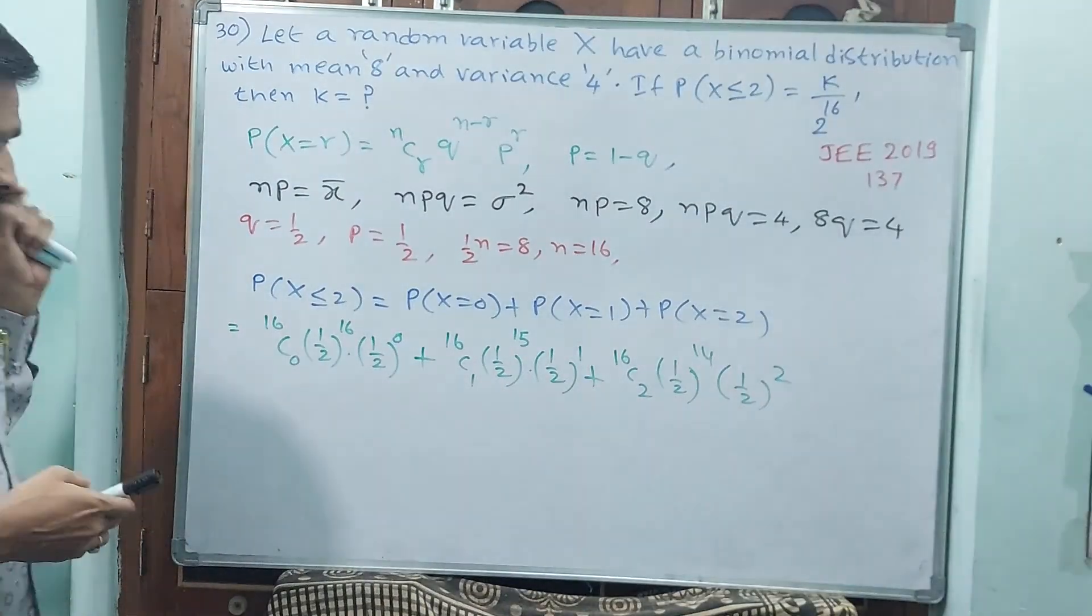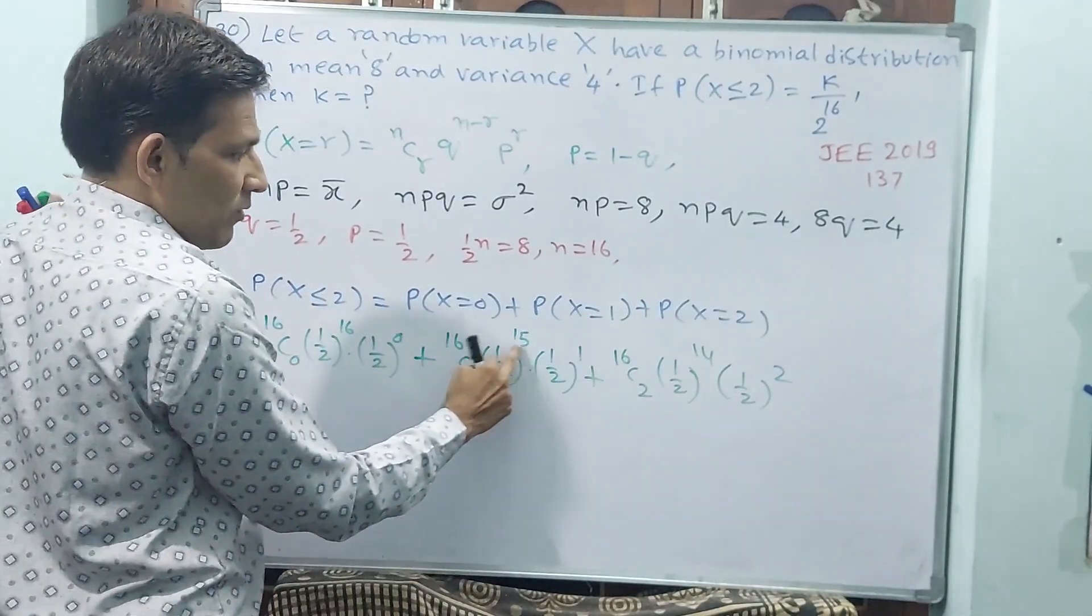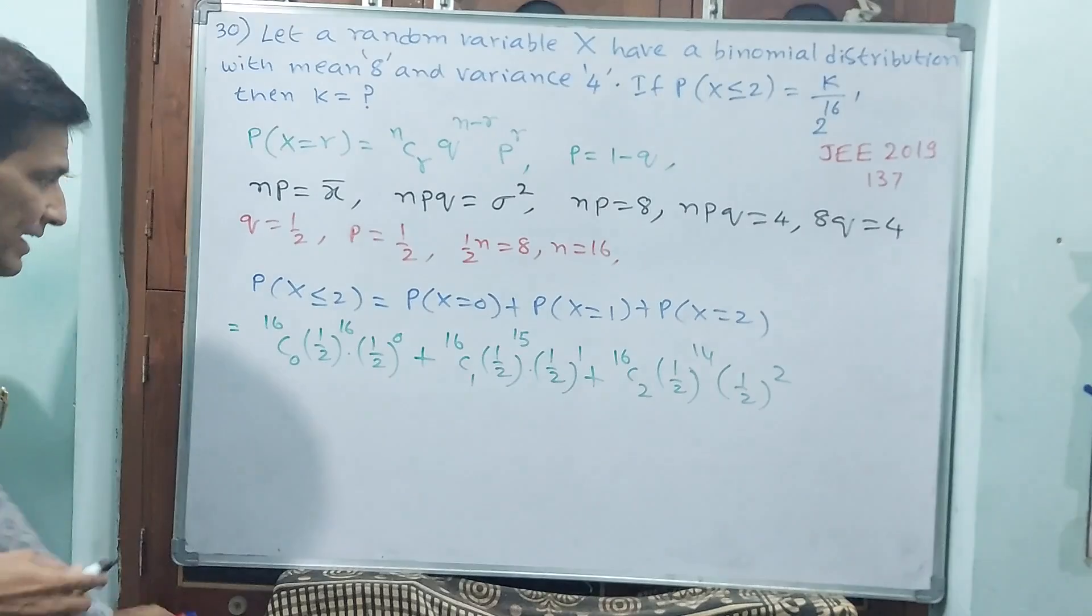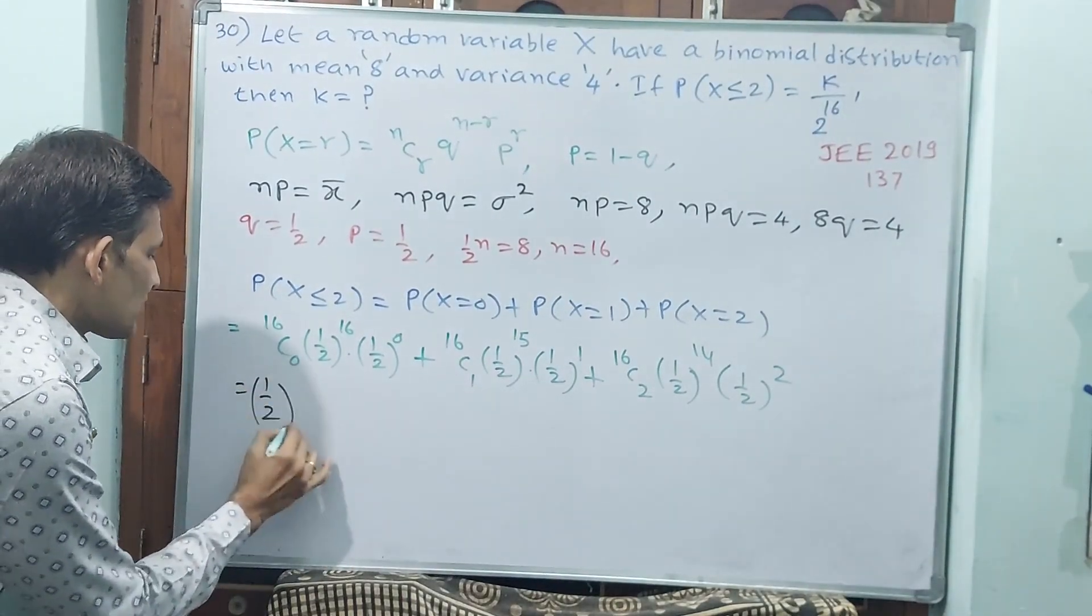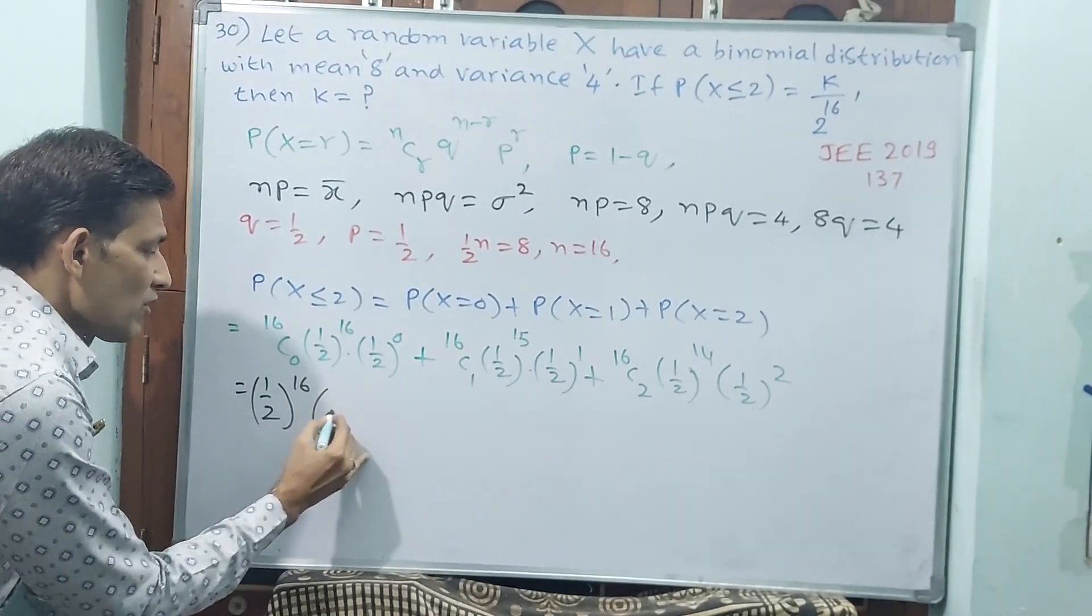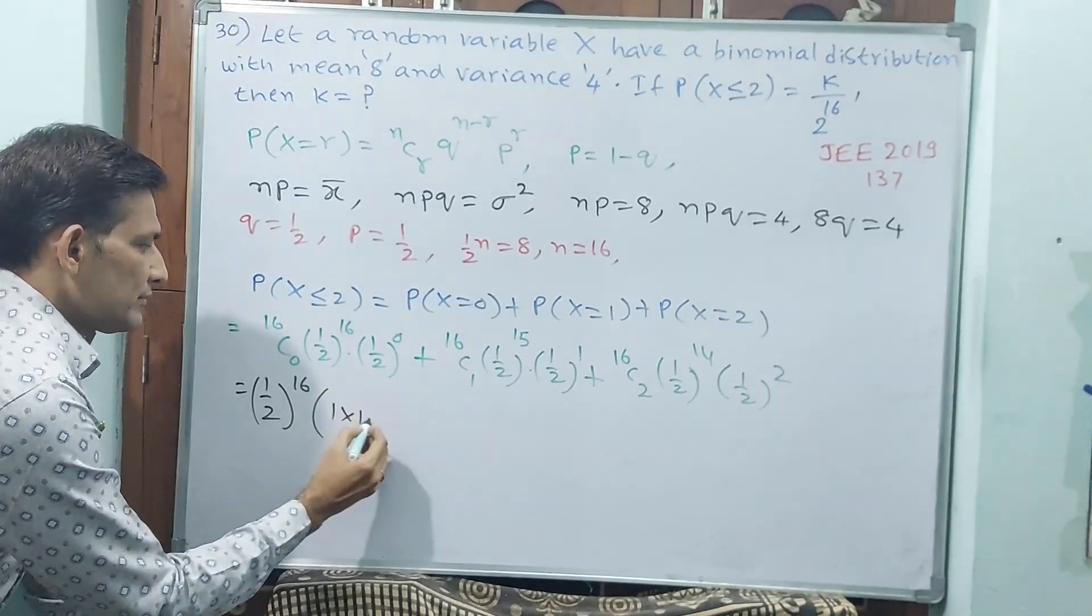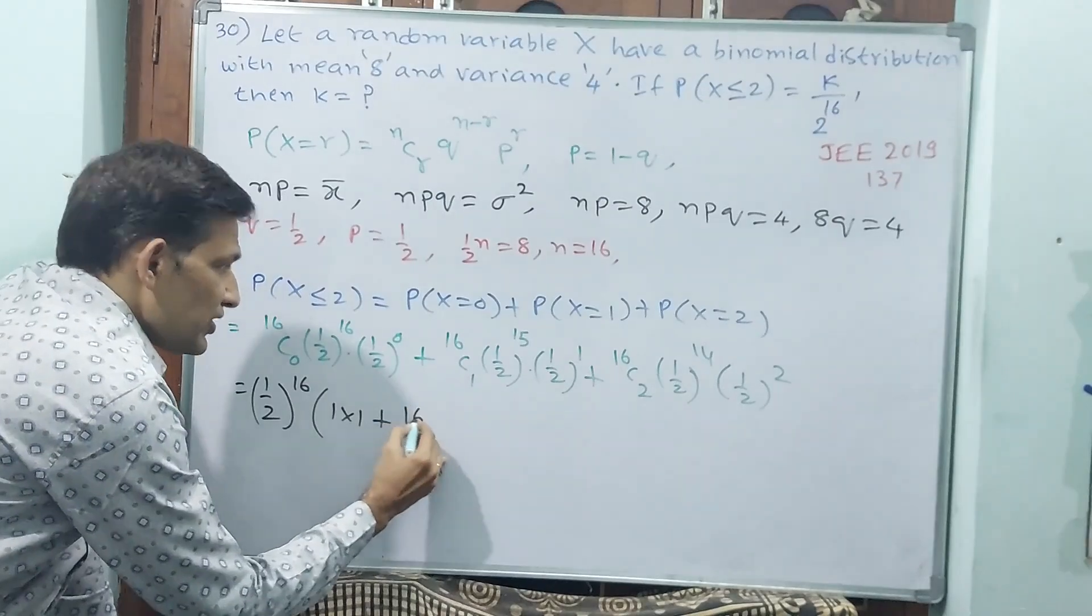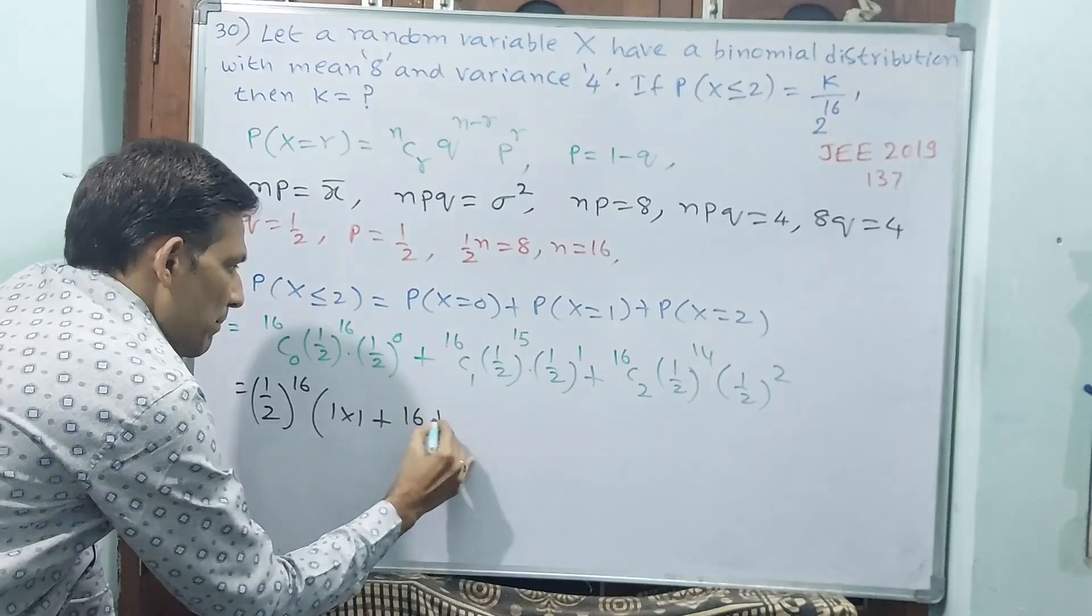Now if you observe carefully, this is 1 × (1/2)^16, plus (1/2)^16, plus (1/2)^16. That means, 1/2^16 you can take common. If you take common here, 16C0 is 1. Plus, 16C1 is 16, these powers have gone outside. Plus 16C2.